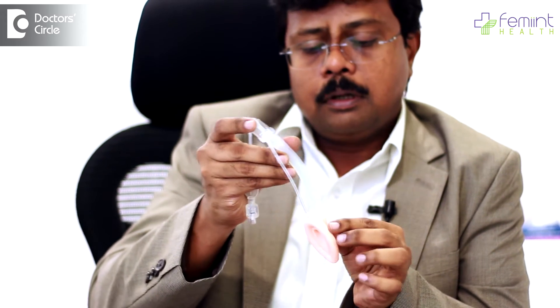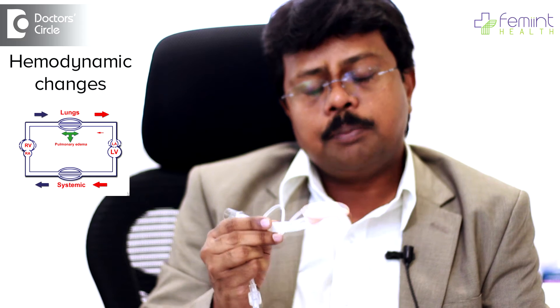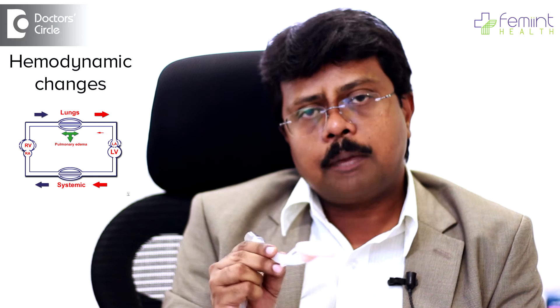This laryngeal mask airway, when you put it into the patient, is usually present on top of the windpipe, and is used to deliver oxygen and anesthetic gases. When you compare it to the endotracheal tube, it is very easy to use. Number one. Number two, when you compare it to the endotracheal tube, the hemodynamic changes of the patient are very minimal while using a laryngeal mask airway, either during induction or at the time of emergence from anesthesia.